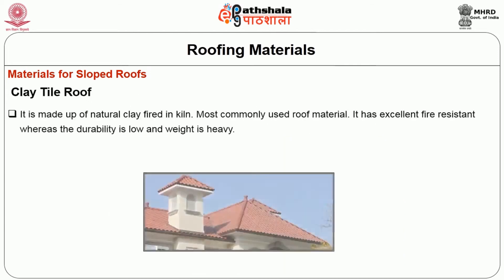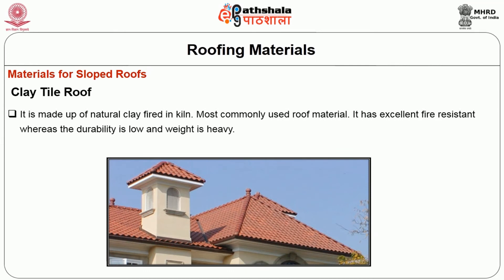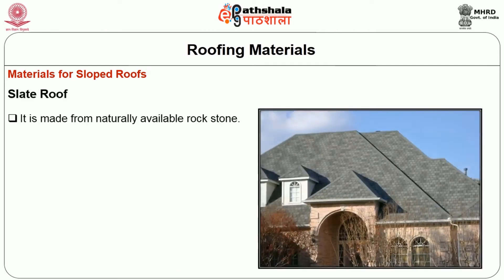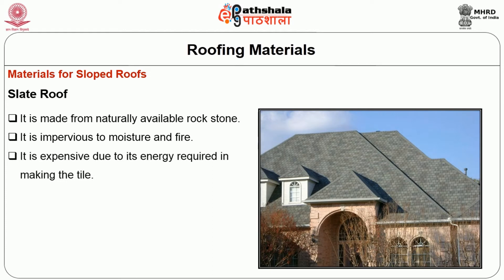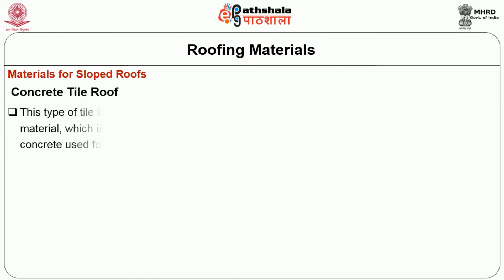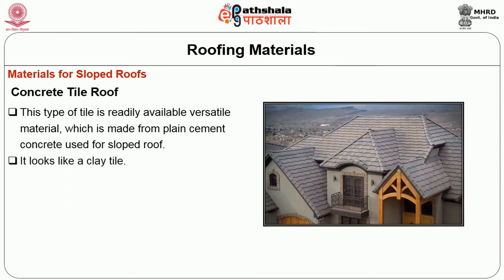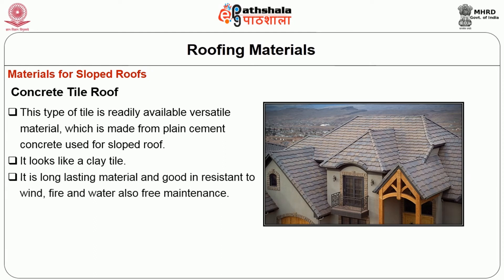Clay tile roof is made from natural clay fired in a kiln and is the most commonly used roof material. It has excellent fire resistance, though its durability is low and weight is high. Despite its brittle nature, it is used in recent construction for the elegance of the building. Slate roof is made from naturally available rock stone — it is impervious to moisture and fire but expensive due to the energy required in making the tile. Concrete tile roof is a versatile material made from plain cement concrete used for sloped roofs; it looks like a clay tile, is long-lasting, and has good resistance to wind, fire and water, with free maintenance.